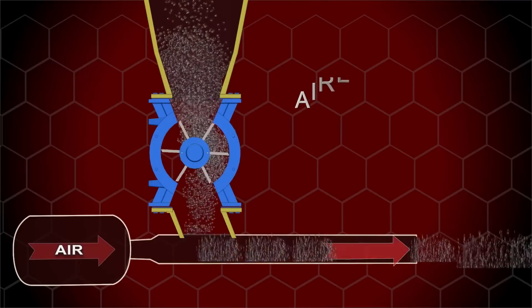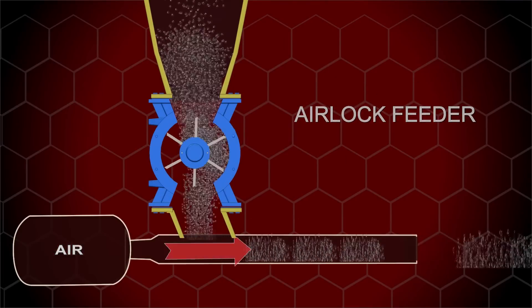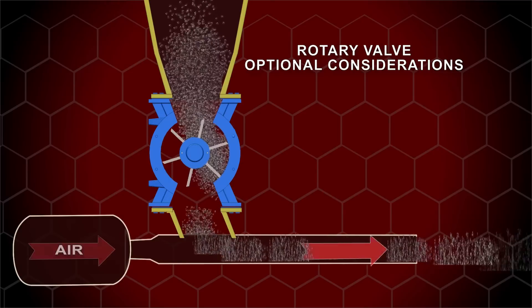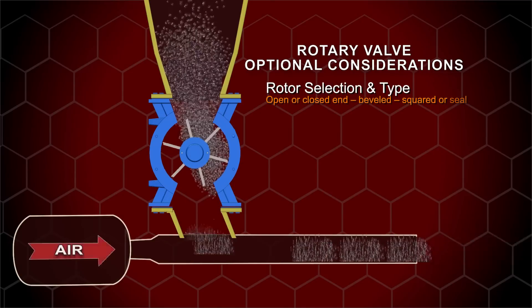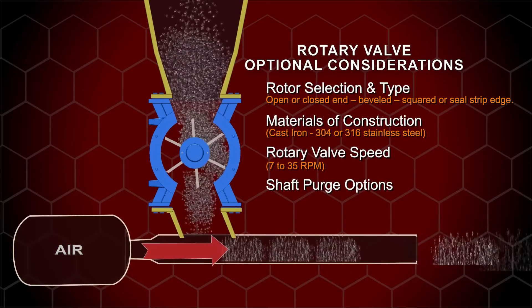The airlock feeder combines the functionality of a metering feeder and an airlock. In addition to the airlock options shown, the following could also be applied: rotor selections and type, materials of construction, rotary valve speed, and shaft purge options.